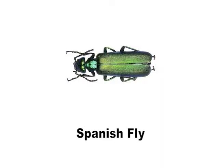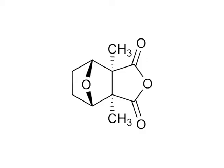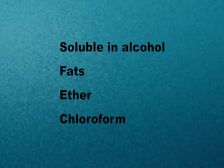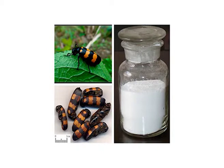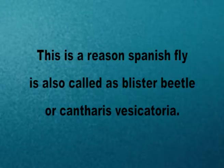Spanish Fly is also known as Cantharis, Cantharis vesicatoria, or Blister Beetle. The active principle is a highly irritant substance called Cantharidin, which is insoluble in water but soluble in alcohol, fats, ether, and chloroform. Cantharis may be administered in powdered beetle form, tincture, or as the active principle. When applied externally, it causes a blister or vesicle, which is why Spanish Fly is also called Blister Beetle.